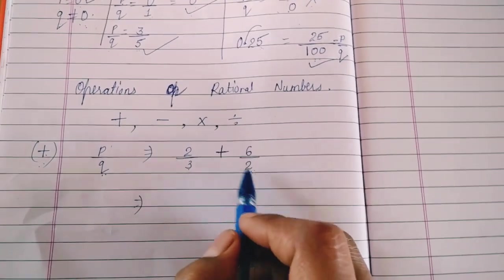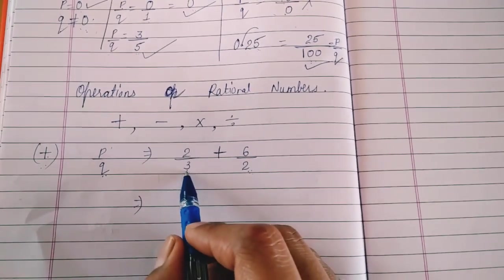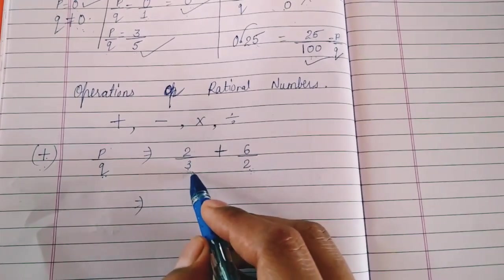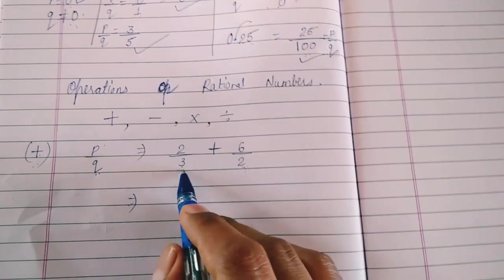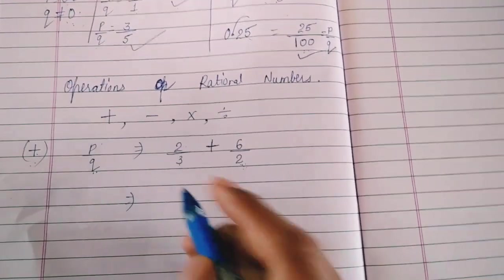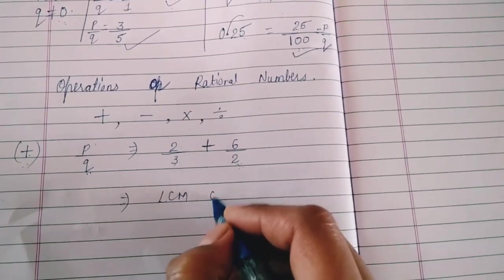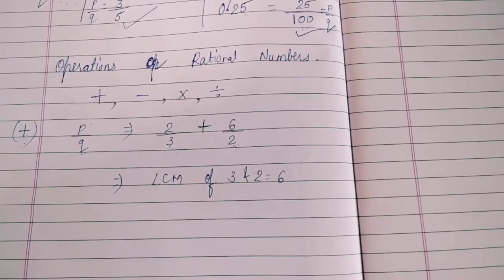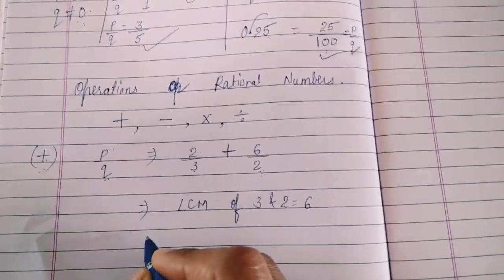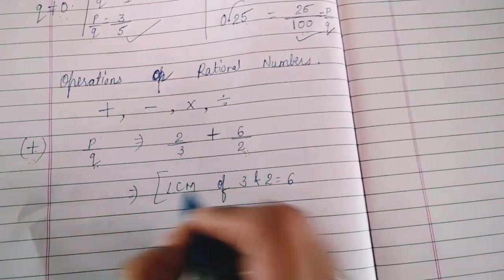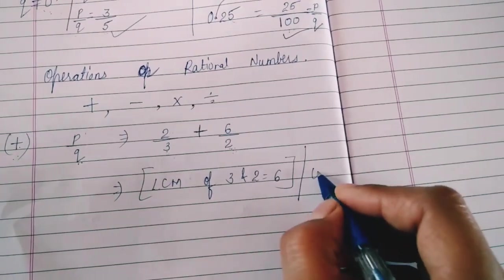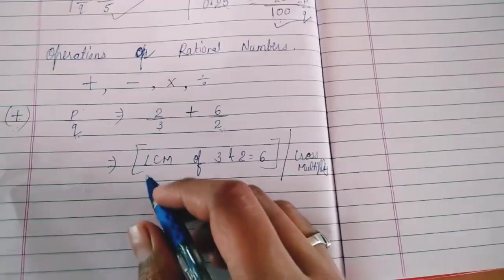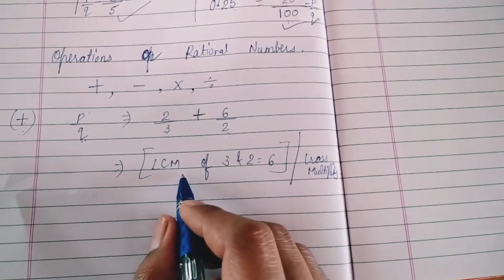For adding two rational numbers, we need the denominator to be equal. Here we have 2 upon 3 and 6 upon 2 — the denominators are unequal. So we will find the LCM of 3 and 2, which is 6. We need to convert both fractions to have a denominator of 6. We can use the LCM method or cross multiplication method. We will use the LCM method: LCM of 3 and 2 is 6.